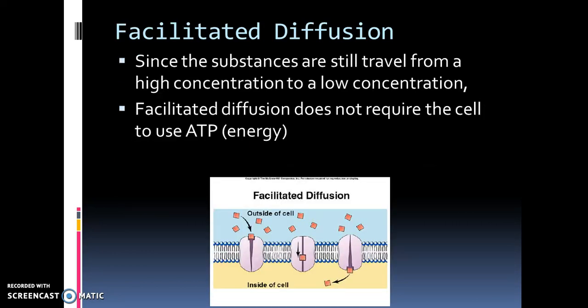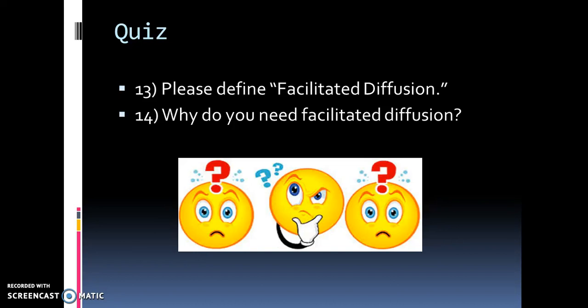Since substances are still traveling from a high concentration to a low concentration, facilitated diffusion does not require energy or ATP, so it is a passive process. The reason molecules need these protein tunnels is because they are not lipids and have a hard time moving through the cell membrane on their own.